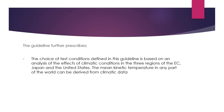The guideline further prescribes that the choice of test conditions defined in this guideline is based on an analysis of the effects of climatic conditions in the three regions of the EC, Japan and United States. The mean kinetic temperature in any part of the world can be derived from climatic data. The test conditions developed for the stability study are based on the analysis of the effects of climatic conditions in these three regions, and the mean kinetic temperature can be calculated from climatic data available from any part of the world.